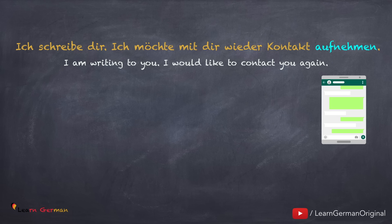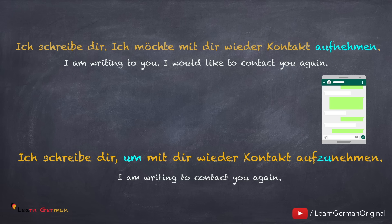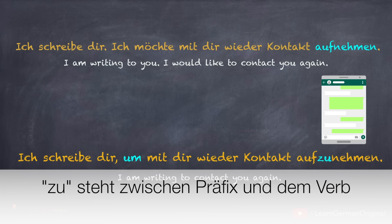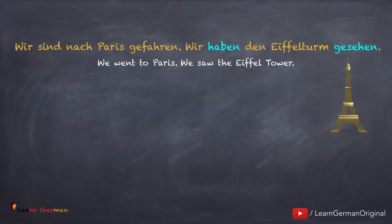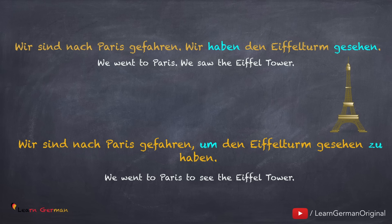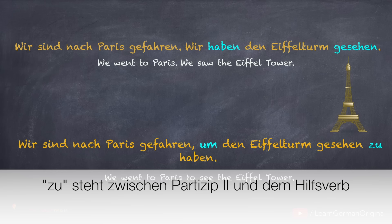Hier ist jetzt ein Beispiel, wo wir ein trennbares Verb haben. Ich schreibe dir. Ich möchte mit dir wieder Kontakt aufnehmen. Wenn wir einen Finalsatz formulieren: Ich schreibe dir, um mit dir wieder Kontakt aufzunehmen. In diesem Fall steht zu zwischen Präfix und dem Verb. Hier ist jetzt ein Beispiel, wo wir das Verb in Perfekt haben — das heißt, ein Hilfsverb und Partizip 2 steht am Ende. Wir sind nach Paris gefahren. Wir haben den Eiffelturm gesehen. Und so sieht der Finalsatz aus: Wir sind nach Paris gefahren, um den Eiffelturm gesehen zu haben. Hier steht zu zwischen Partizip 2 und Hilfsverb. Das Hilfsverb steht am Ende im Infinitiv.